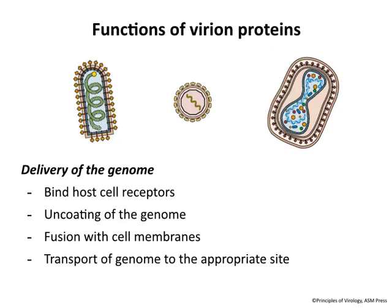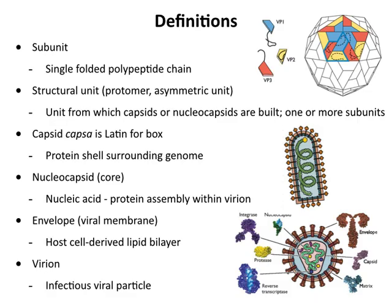That is a protective role. The proteins that make up the particles also have to help deliver the genome to the cell — they have to bind receptors, they have to help uncoat it. The process by which the nucleic acid comes out of the particle into the cell is called uncoating, and it may involve fusion of viral and cellular membranes. The genome also has to be brought to the right place in the cell, and that transport is often carried out by the interaction of structural proteins with the transport machinery of the cell. Many different functions are embodied in these structural proteins.